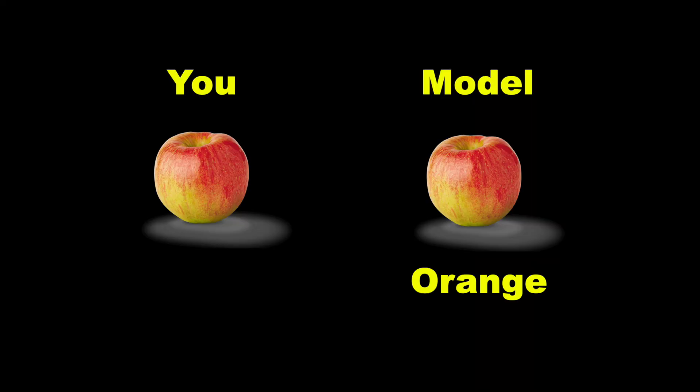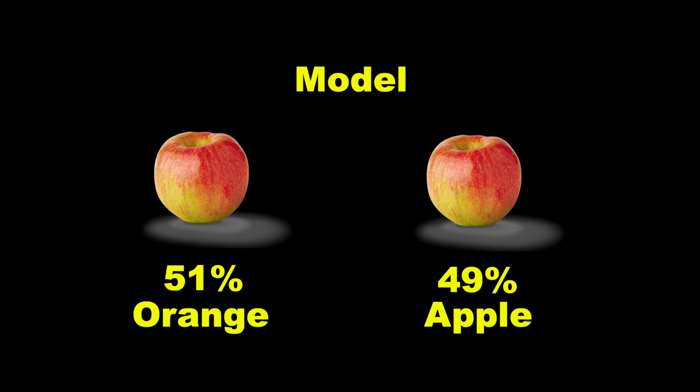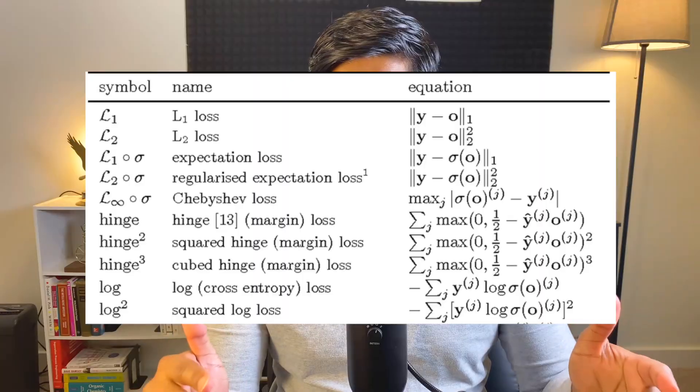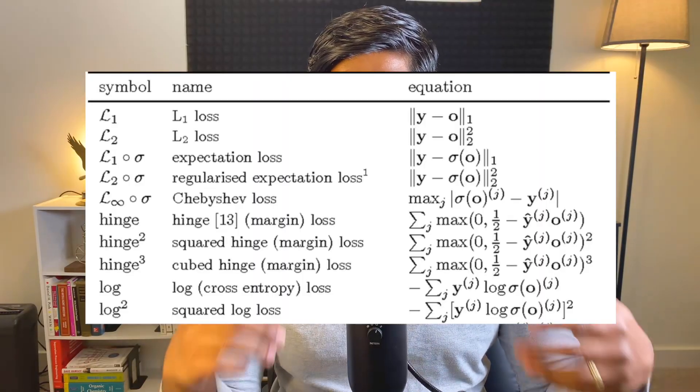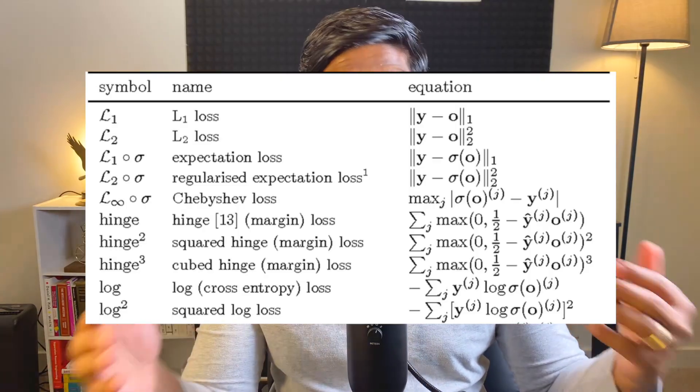For example, you have an image of an apple and your model says maybe it's an orange. Since everything is in terms of numbers, how confident is the model? Your model might say it's 51% sure this is an orange, but 49% sure that it's an apple. How do you get to that number? That goes back to the concepts of the loss function. There are many different loss functions depending on the type of data and the task at hand.